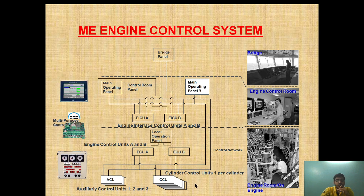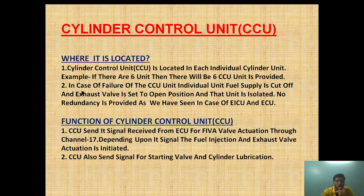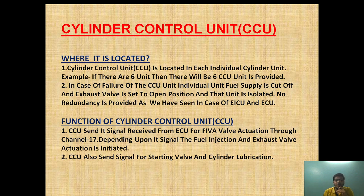As mentioned, if any CCU unit fails — say, out of 6 cylinder units, suppose number 4 cylinder unit CCU fails — it will automatically go to a fail-safe mechanism. It will automatically open the exhaust valve and cut off the fuel supply, since there is no backup provided for the CCU. The CCU sends its signal, received from the ECU, for fuel valve activation through channel 17. Depending upon that signal, fuel injection and exhaust valve activation is initiated.